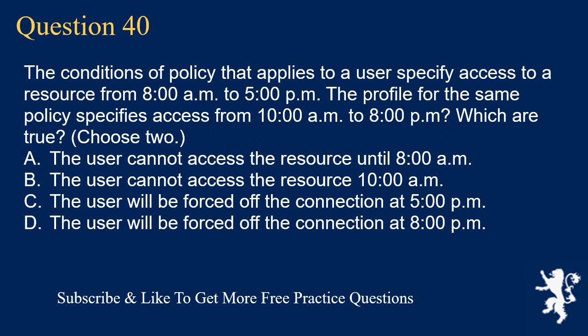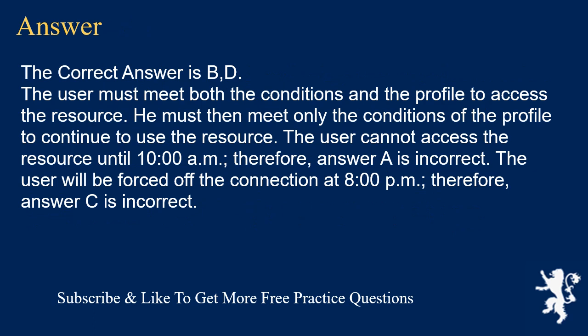Question 40. The conditions of a policy that applies to a user specify access to a resource from 8 a.m. to 5 p.m. The profile for the same policy specifies access from 10 a.m. to 8 p.m. Which are true? Choose 2. A. The user cannot access the resource until 8 a.m. B. The user cannot access the resource until 10 a.m. C. The user will be forced off the connection at 5 p.m. D. The user will be forced off the connection at 8 p.m. The correct answers are B and D. The user must meet both the conditions and the profile to access the resource, then must meet only the profile conditions to continue. The user cannot access the resource until 10 a.m. Therefore, answer A is incorrect. The user will be forced off at 8 p.m. Therefore, answer C is incorrect.